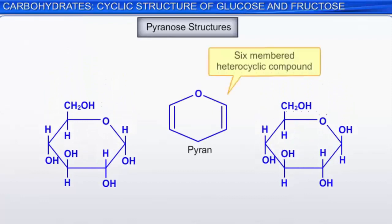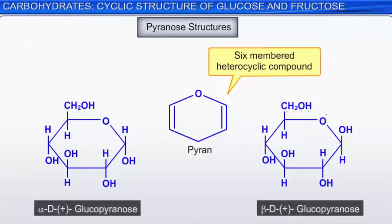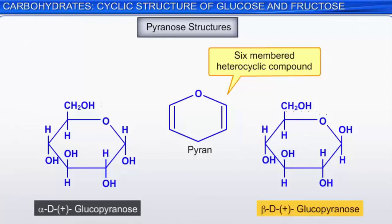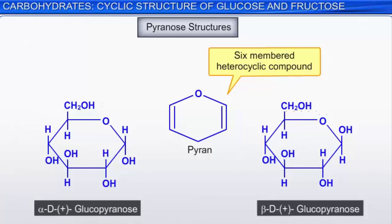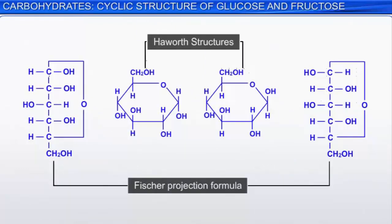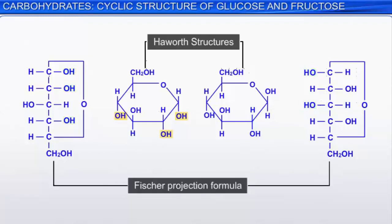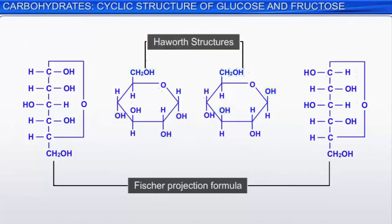The six-membered ring structures of glucose can be called pyranose structures, in analogy with pyran, a six-membered heterocyclic compound. Hence the anomers are called alpha-D-plus-glucopyranose and beta-D-plus-glucopyranose. Note that the hydroxyl groups on the right side and the left side in the Fischer projection formula are directed below and above the plane of the ring, respectively, in Haworth structures. Also, the terminal CH2OH is always projected above the plane of the ring.